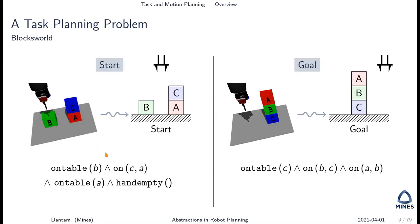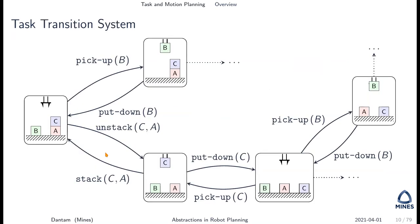Here's the classic task planning problem — the blocks world — where we take a discrete abstraction of a manipulation problem. We describe positions and relative positions of objects using logical predicates and have actions about how to rearrange the blocks. You can think of this as a big finite state machine: different discrete states with actions as transitions. For small problems you could fit the entire automaton on one slide, but for anything interesting you end up with more states than grains of sand.